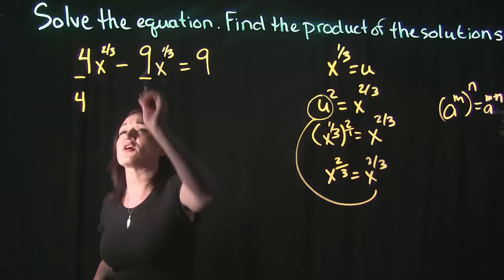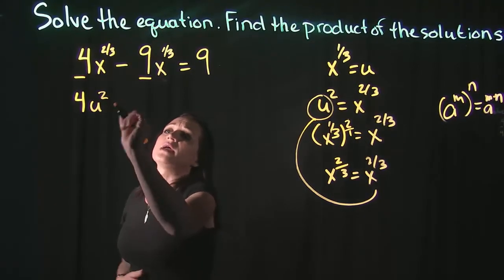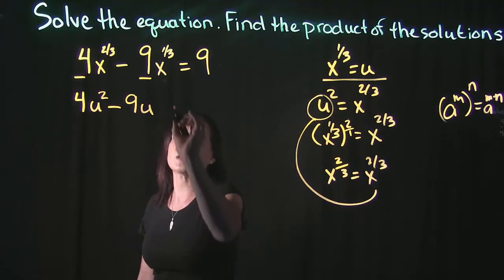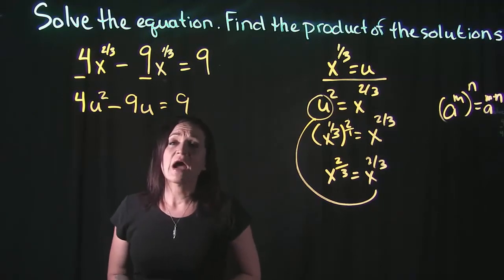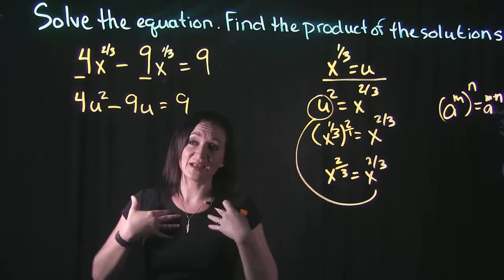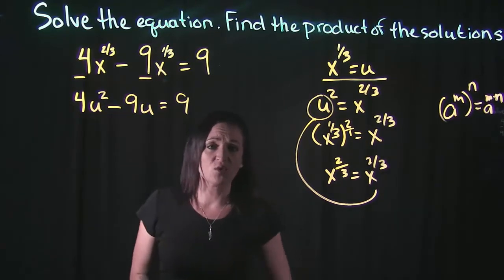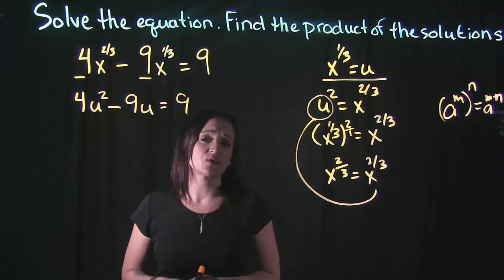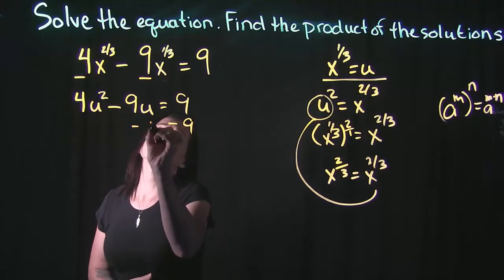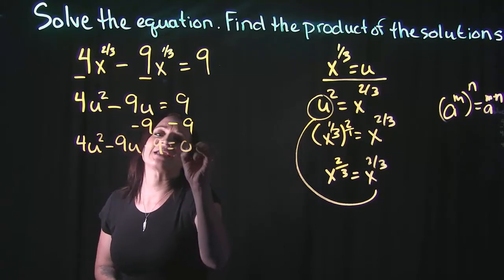So I can take x to the 2/3 and replace it with u squared. I'm then going to subtract 9, and x to the 1/3 — which I set equal to u — so that's just u. And that equals 9. This looks much easier to solve than the original. In this form I can see this is a quadratic equation, and anytime we deal with quadratics we move everything to one side, set it equal to 0, then solve by factoring, completing the square, or the quadratic formula. Subtracting 9 from both sides gives us 4u² minus 9u minus 9 equals 0.